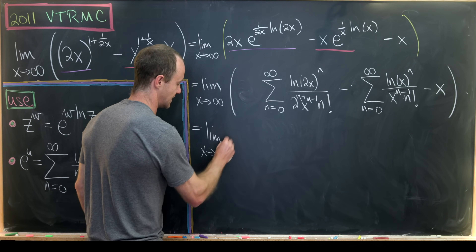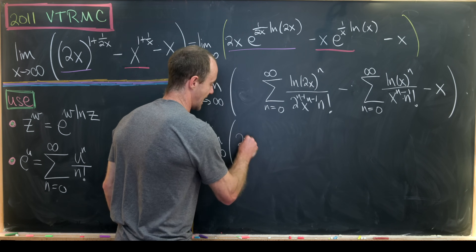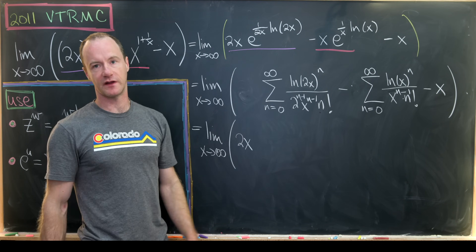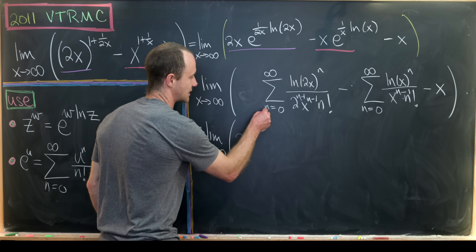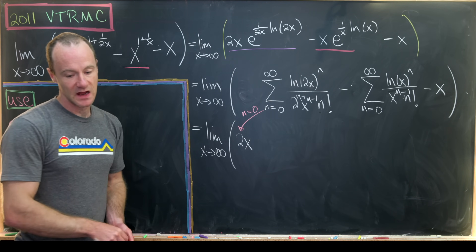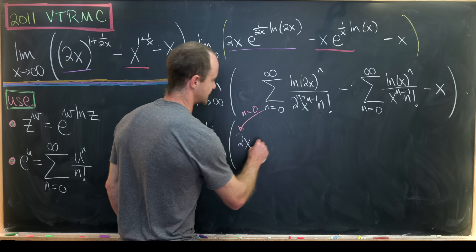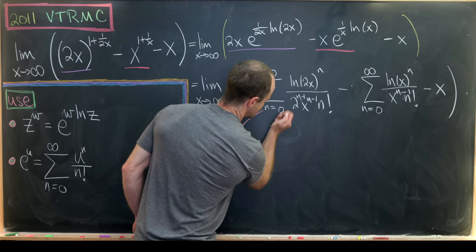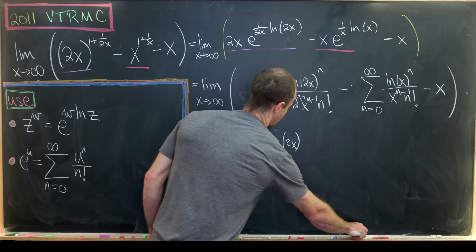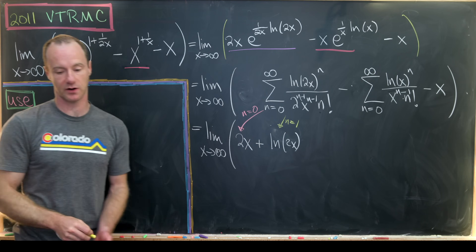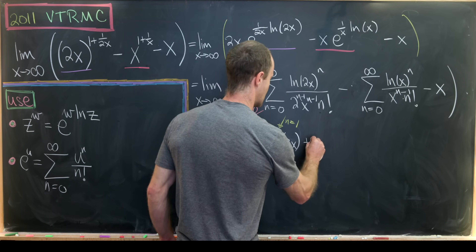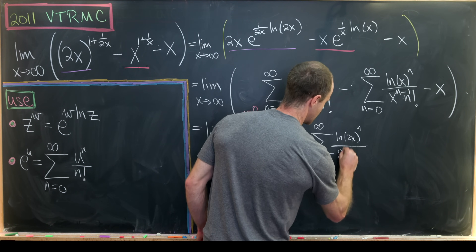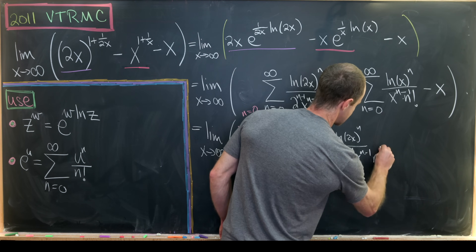The limit as x goes to infinity: the zeroth term (n=0) of the first sum gives 2x times (1 over 2 to the negative 1 times x to the negative 1), which equals 2x. The first term (n=1) gives the natural log of 2x. The remaining terms form the sum from n equals 2 to infinity of (natural log of 2x) to the n over (2 to the n minus 1 times x to the n minus 1 times n factorial).